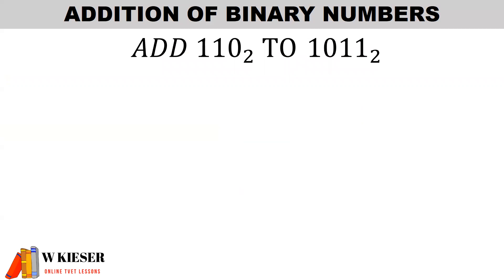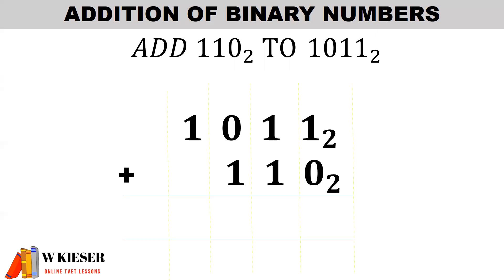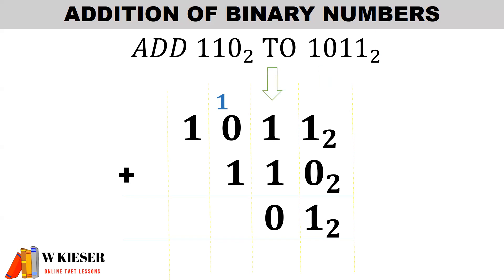Now for our question: we need to add the binary number 110 to the binary number 1011. When we write those numbers out, make sure each digit is aligned correctly in its column, and we work from the right-hand side to the left. In the first column on the right, we have 1 plus 0 which equals 1. In the second column from the right, we have 1 plus 1 which equals 0 carry 1. In the third column from the right, we have 1 plus 1 plus 1 which equals 0 carry 1.